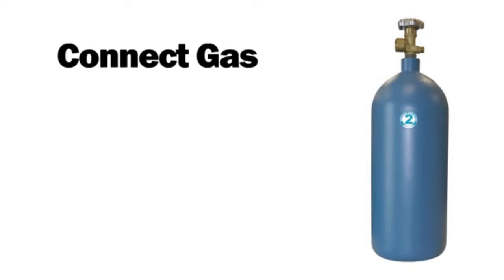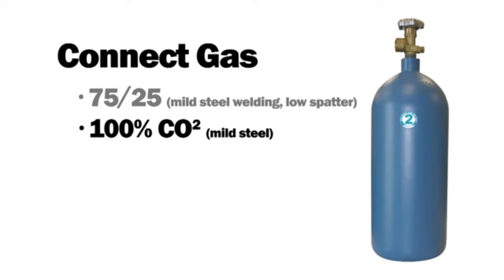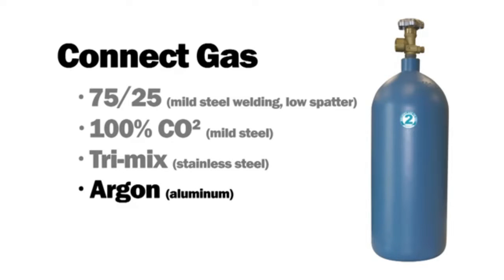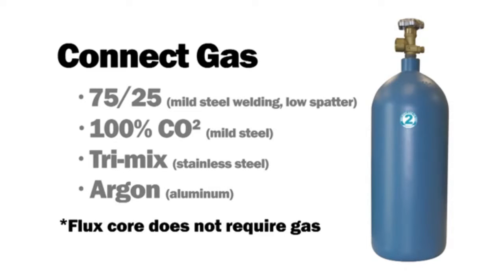Now you need to select the type of gas appropriate for the welding you'll be doing. 7525 shielding gas is the most popular mixed gas for MIG welding because of its low spatter. 100% CO2 can also be used for mild steel. Tri-mix shielding gases are recommended for stainless steel and 100% argon is necessary for aluminum. Note that self-shielded flux core welding does not require gas.